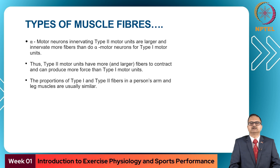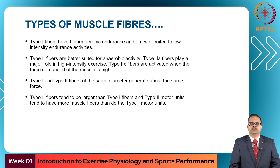Alpha motor neurons innervating type 2 motor units are larger and innervate more fibers than those for type 1 units. Thus, type 2 units have more and larger fibers and can produce more force than type 1 motor units. The proportion of type 1 and type 2 fibers in a person's arm and leg muscles is usually similar. Type 1 fibers have higher aerobic endurance and are well suited to low intensity endurance activities, while type 2 fibers are better suited for anaerobic activities.